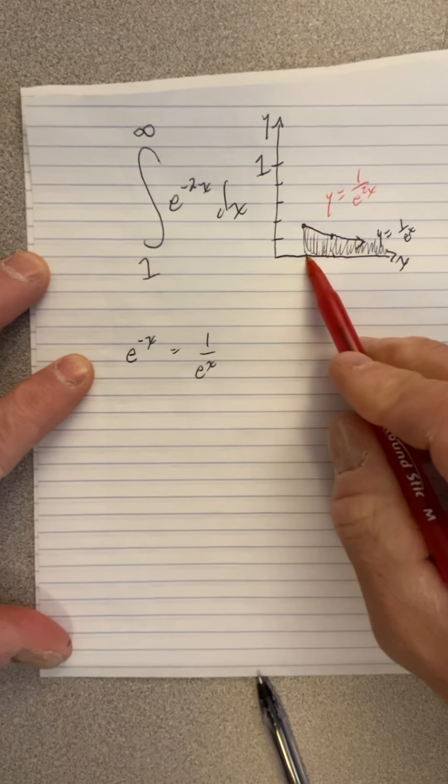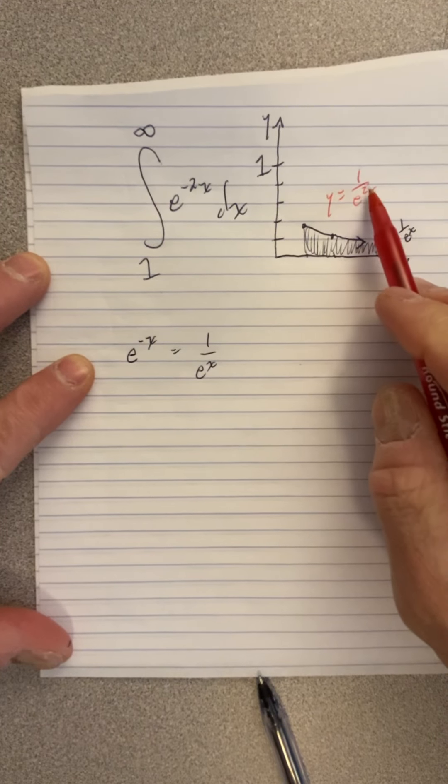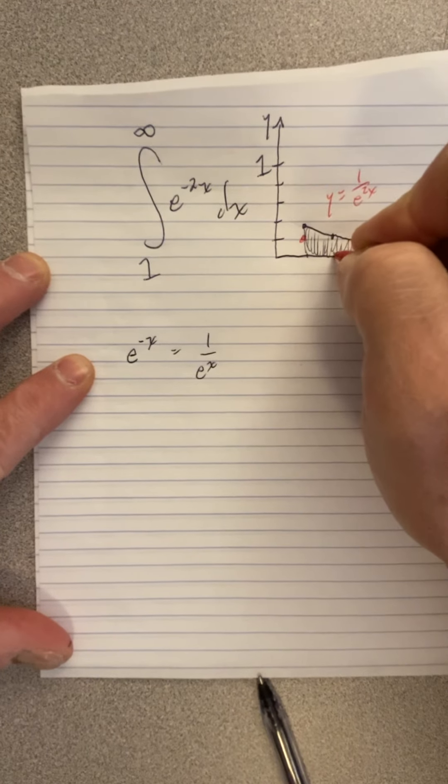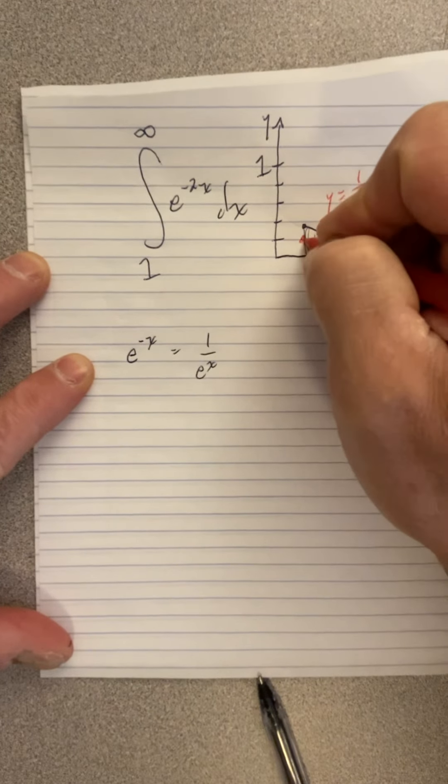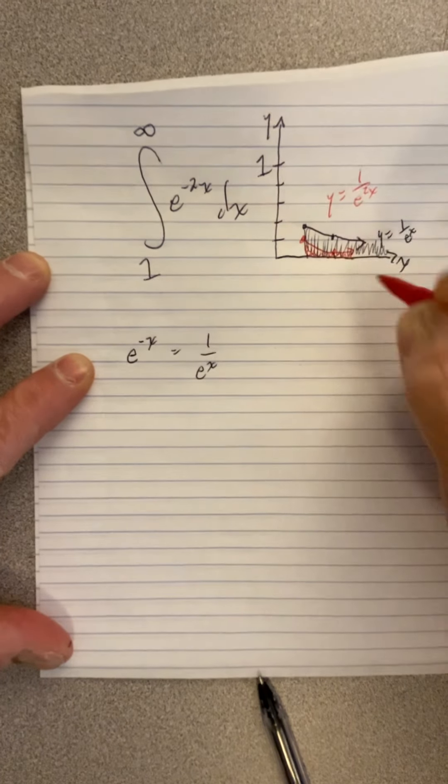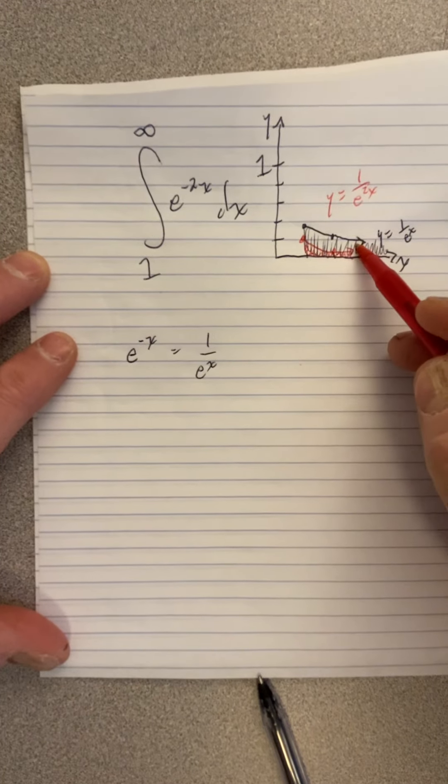Well, if you put in 1 now, you get 1 over e squared. So we're already at this second point. And then when you put in 2, you get e to the fourth, so it drops down dramatically. So see, we can show, we can see that this area is smaller than the black area.